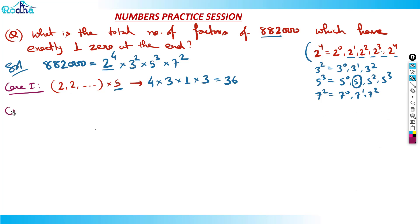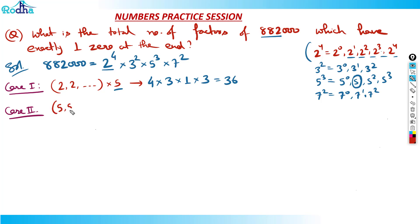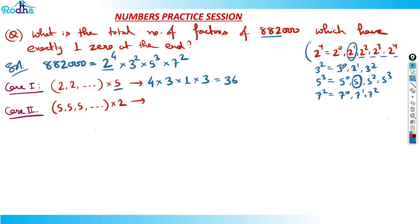Case 2: Fives are multiple, two is exactly one. From the twos bracket, I pick exactly one power of two — 1 choice. From the threes bracket, I can pick any of 3 terms. From the fives bracket, I can pick 5¹, 5², or 5³ — so 3 choices (not 5⁰). From the sevens bracket, again 3 choices. Total: 1 × 3 × 3 × 3 = 27 factors.